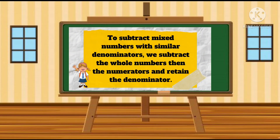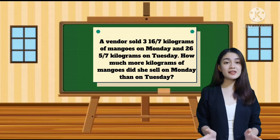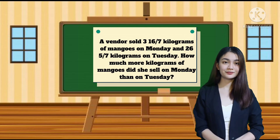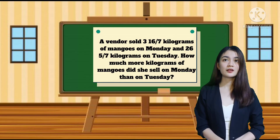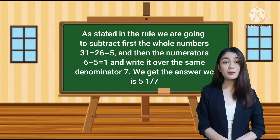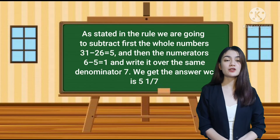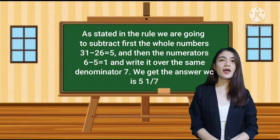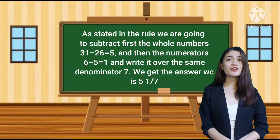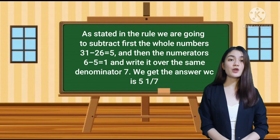To subtract mixed numbers with similar denominators, we subtract the whole numbers and the numerators and retain the denominator. What is asked? What are given? We subtract the whole numbers first: 31 minus 26 equals 5. Then the numerators: 6 minus 5 equals 1, written over the same denominator. The answer is 5 and 1 seventh.